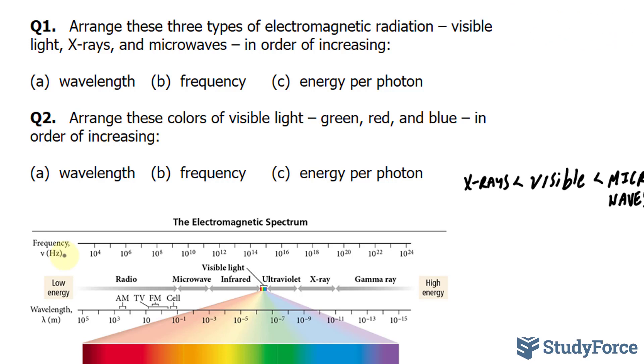So the ordering with respect to frequency is the reverse order of what we found here. Visible light is less than X-rays but greater than microwaves.